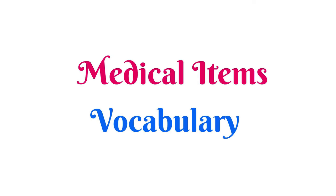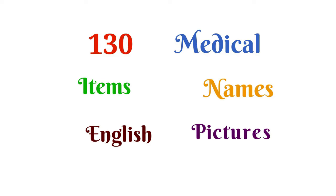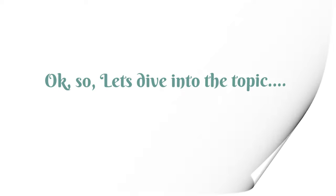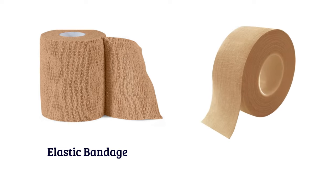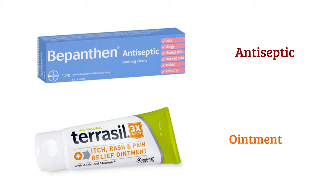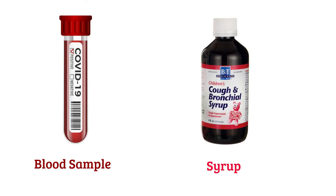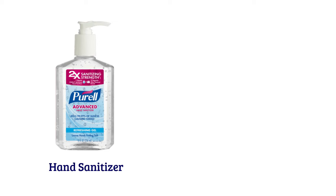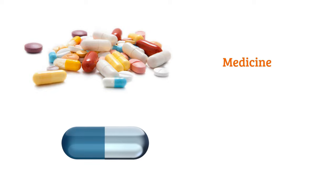Medical items vocabulary — about 130 medical item names in English with pictures. Let's dive into the topic: bandaid, bandage, elastic bandage, adhesive tape, antiseptic ointment, alcohol, poison, blood sample, syrup, hand sanitizer, hand wash, medicine, capsule.